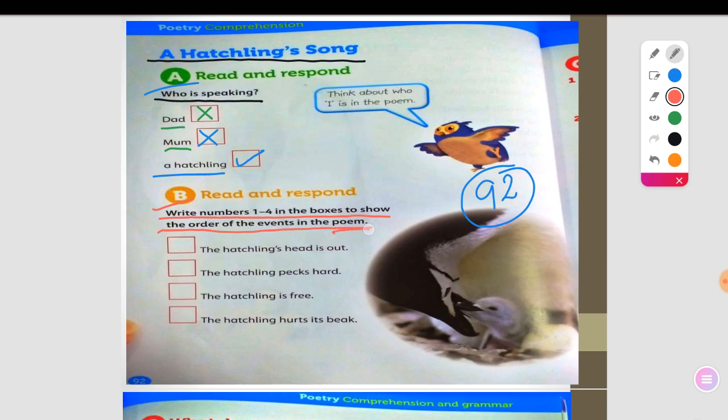By the way, I need to tell you something. This word: poem or poem. We can say poem or poem. Understood?